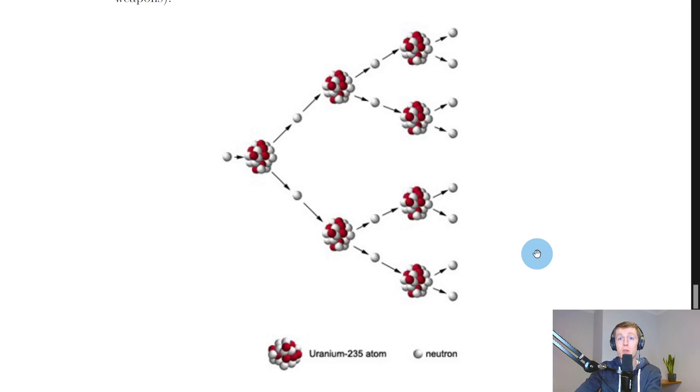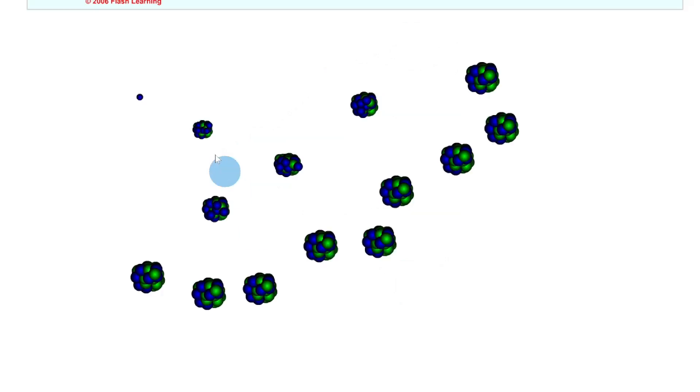Now just to show you a quick simulation to help you visualize the chain reaction. So here we've got a neutron and then different nuclei, and this is our target nucleus that's going to be hit first by the neutron.